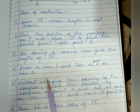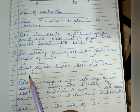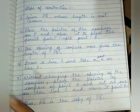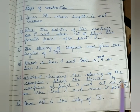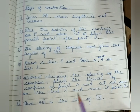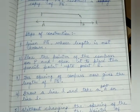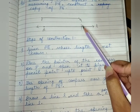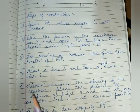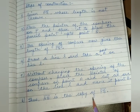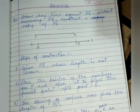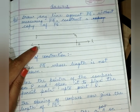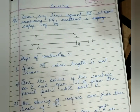Then draw a line L and take a point A on line L. Without changing the opening of the compass, place the pointer on point A and cut an arc on line L. Name that intersection point B. So AB is the required copy of line segment PQ. This was question number 1 — I hope it is clear to you.